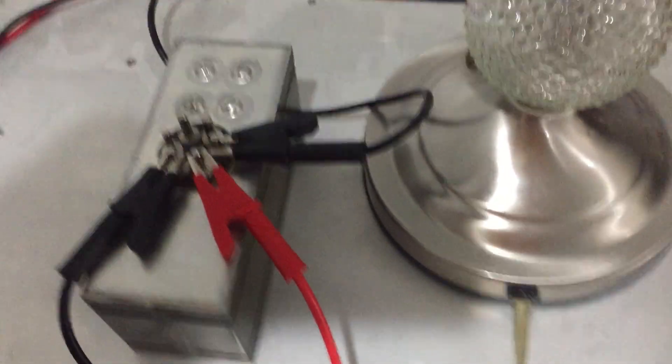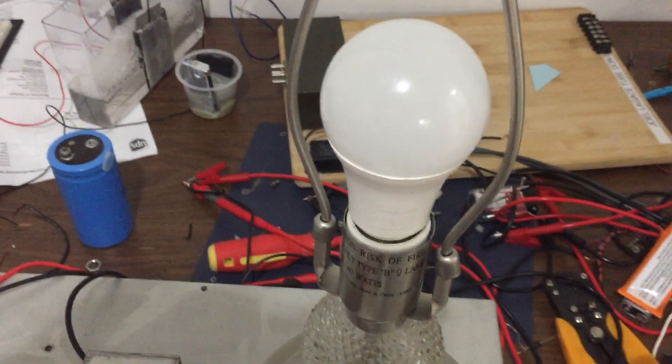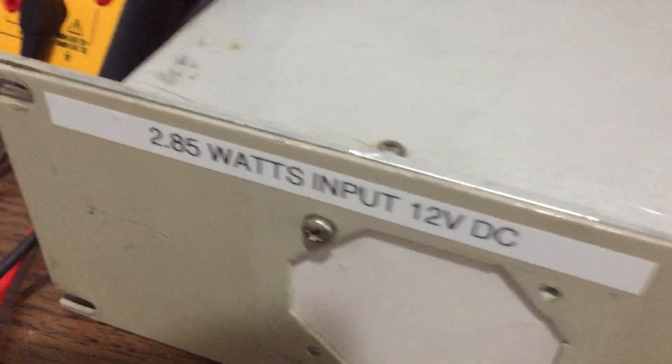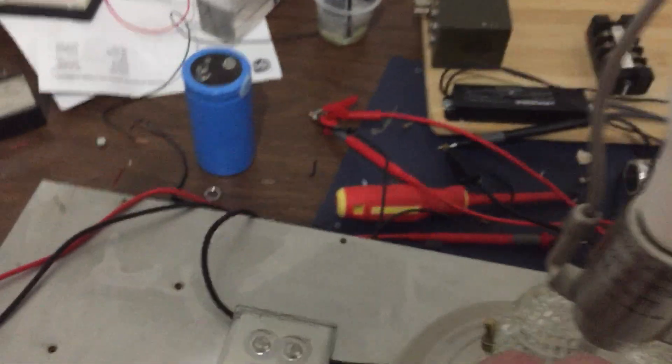So if we want AC, we could just chop it at 60 hertz with a vibrator here. Mind you, it won't run the load at full brightness because it's only 4.6 watts out even though it's only 2.8 input. It's still gain, but not enough to run.